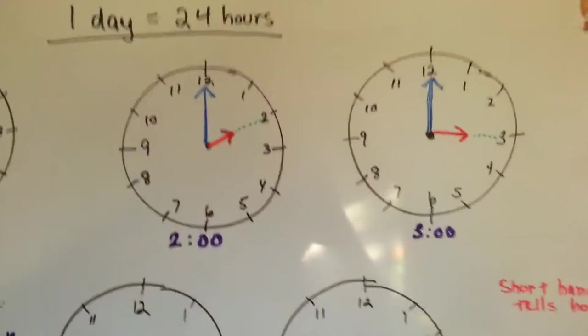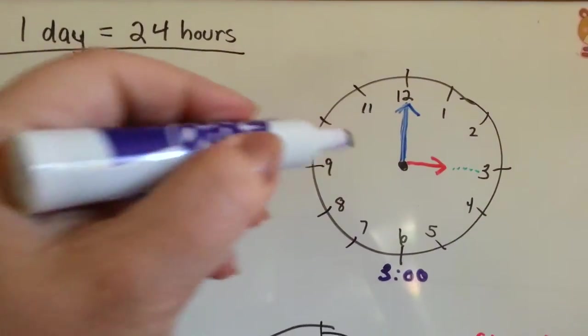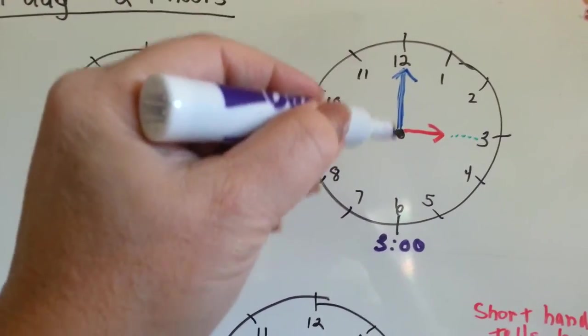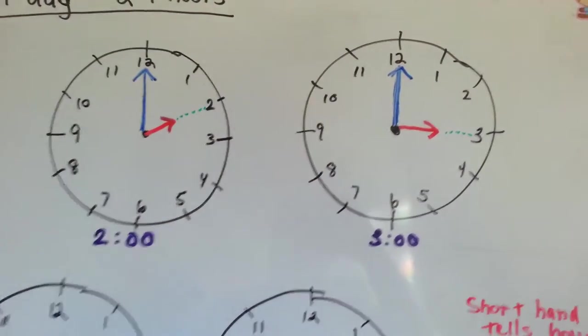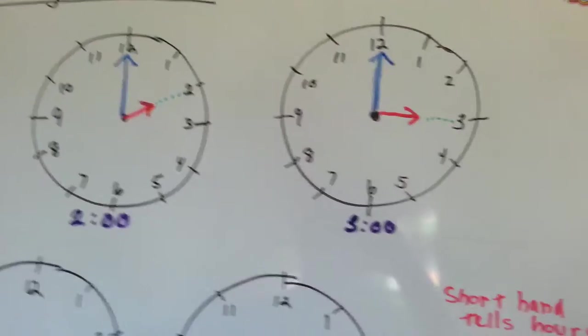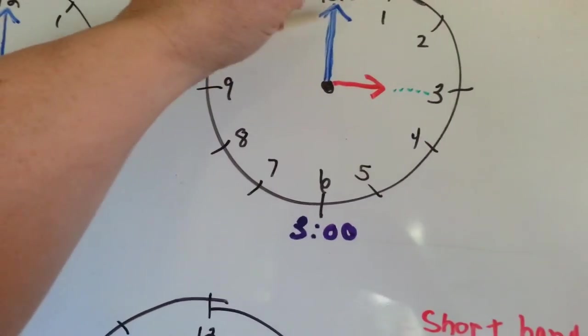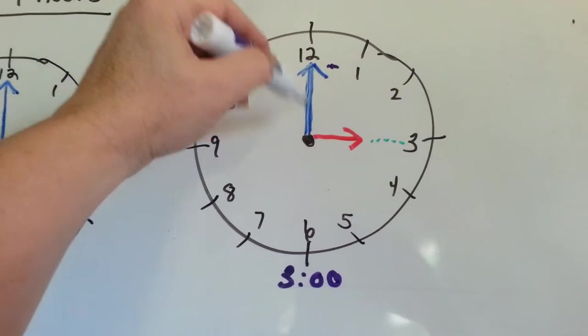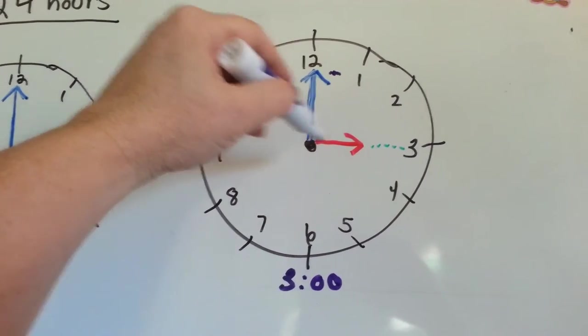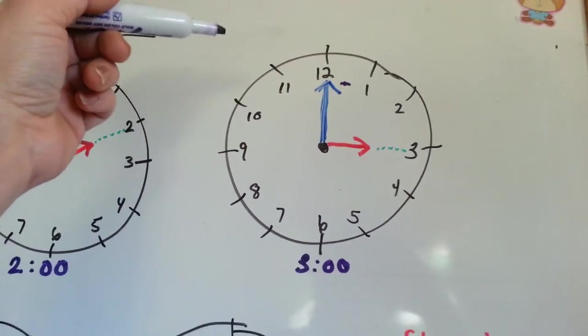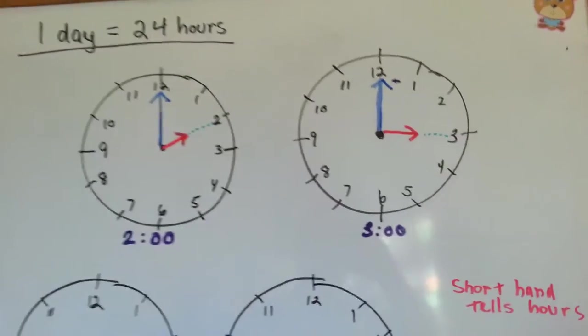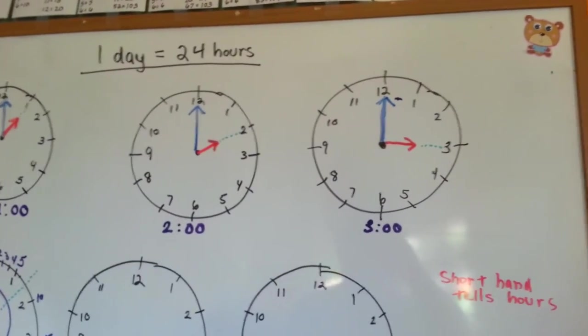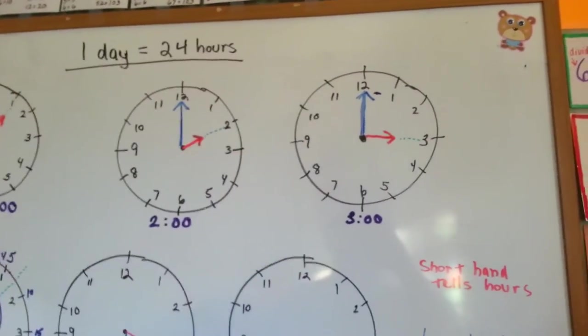So remember, when it's on the hour, pointing directly at the hour, and this one's straight up and down, it means it's 3 o'clock. Sometimes, when the minute hand is pointing here, like just a couple minutes after, people don't say it's 3:02. They say it's still 3 o'clock, because it's roughly that time. If someone's in a hurry and they say what time is it? They say it's around 3 o'clock. That means it's close to that time.